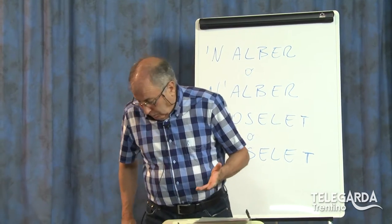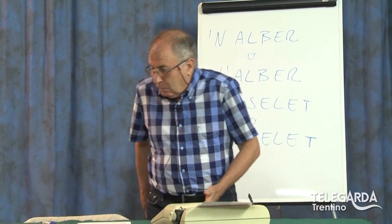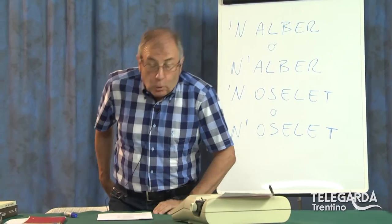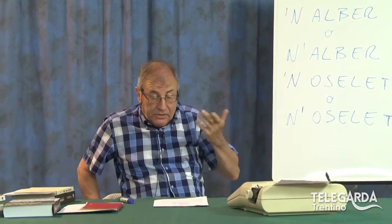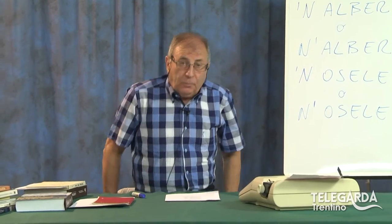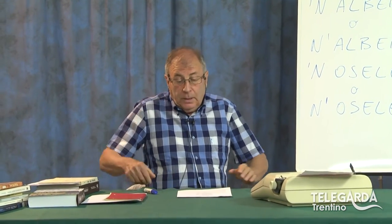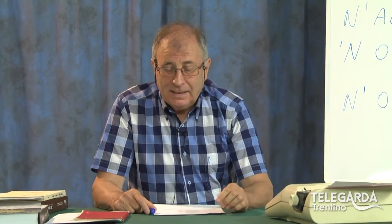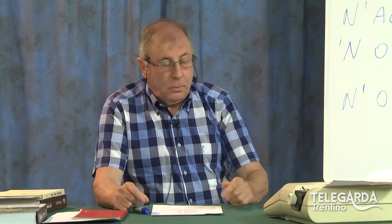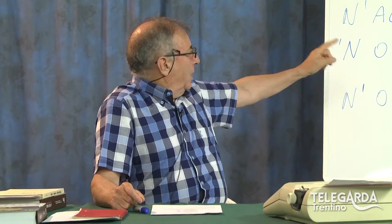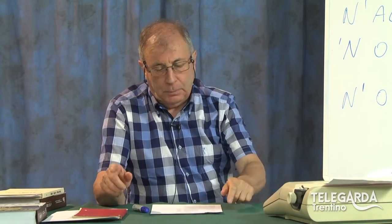Questo lo dico appunto perché è un problemino nato da alcuni amici che mi dicevano: ma si scrive con l'apostrofo prima o con l'apostrofo dopo? Rispondo in forma semplice, un po' pilatesca, nel senso che la maggior parte dei poeti dialetali trentini usa mettere l'apostrofo dopo, quindi come la seconda forma: N'alber, N'oselet, apostrofo dopo.